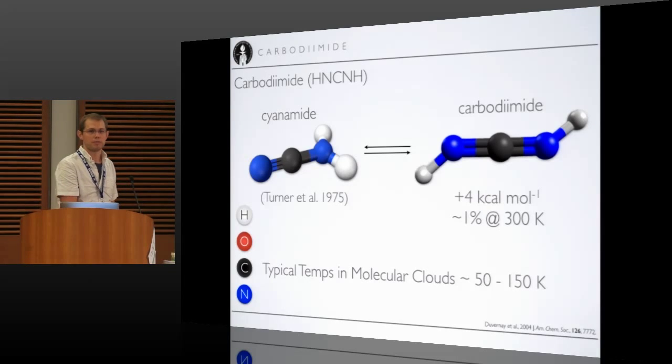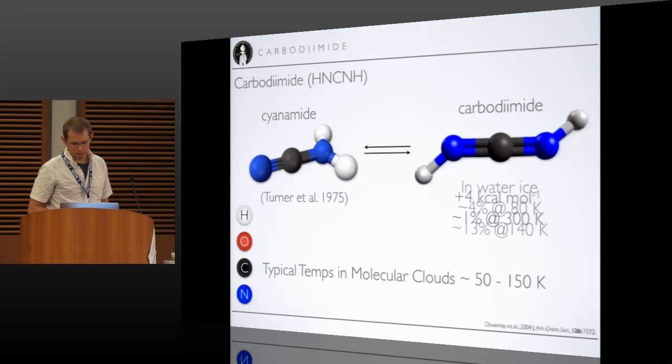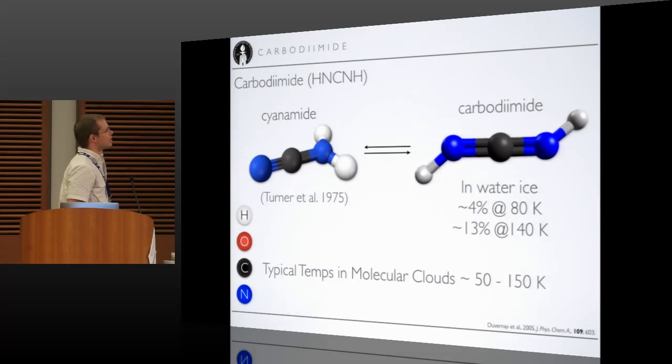But in space, where the temperatures are cold, there's not actually much of it. So at room temperature here, about 1% of a bottle would be carbodiimide. But in space, where we're looking at temperatures of much smaller, so 10K or 50K, that drops to a tenth of a percent or a hundredth of a percent.